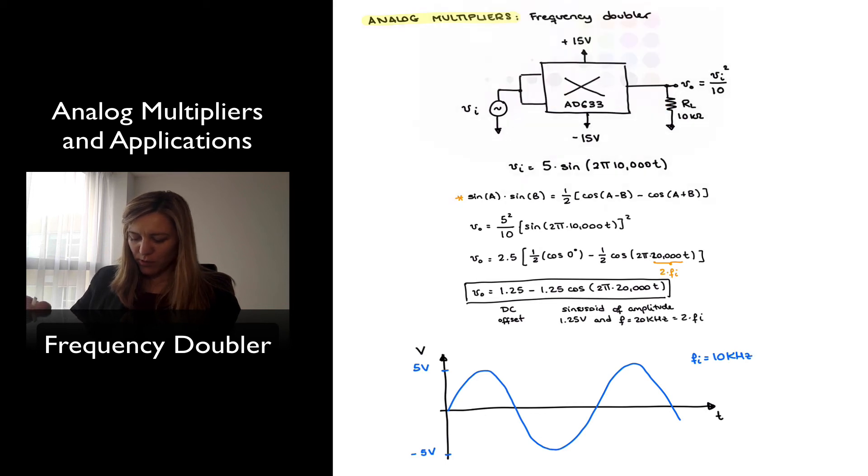And in the case of my output signal, I can see it's going to have an offset of 1.25 volts, which is one-fourth of the amplitude of my input signal. And it's going to be a sinusoid also with amplitude 1.25 volts.